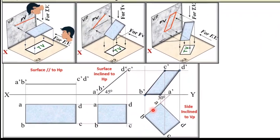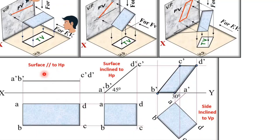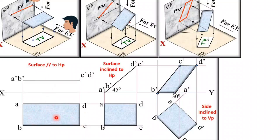In summary, in the first stage you assume the plane is either parallel to VP or parallel to HP. In the second stage the surface is inclined to VP or HP, and in the third stage the side of the plane is inclined to VP or HP. Since we started with the top view — where the true shape is seen — in the first stage you always start with the top view, then draw the front view. Your sequence must be: draw the top view, then the front view, then transfer it across.